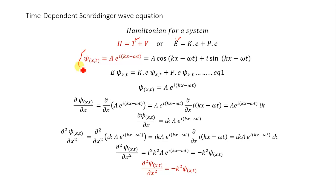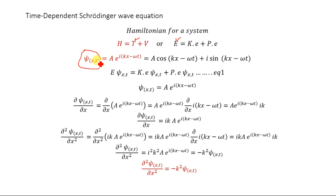In quantum mechanics we work with the wave function, which is a function of position and time, denoted by ψ. It equals Ae^(i(kx − ωt)) in exponential form, or equivalently A·cos(kx − ωt) + i·sin(kx − ωt) as a complex wave function. This wave function has four dimensions: three spatial (x, y, z) and time. When we apply different operators to this wave function, we obtain kinetic energy, potential energy, and momentum.